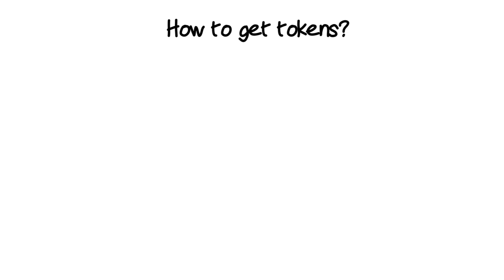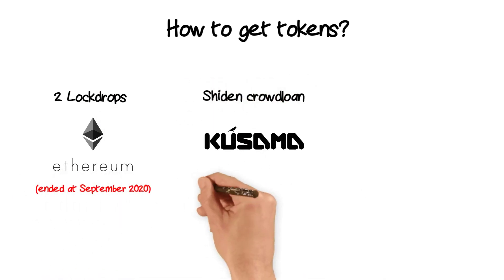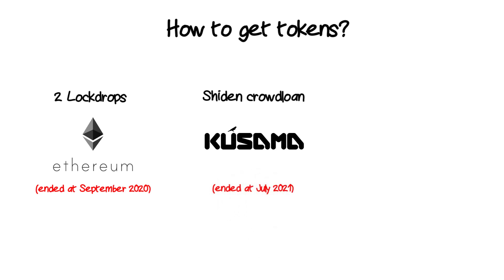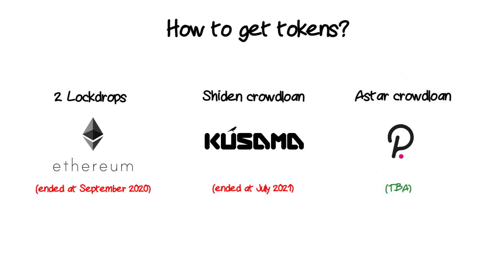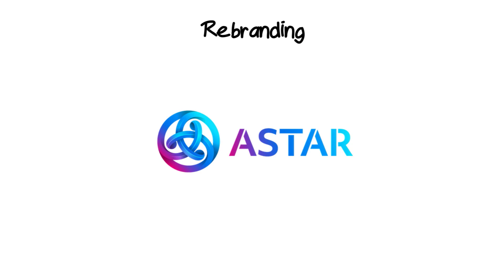Astar developers follow the fair launch principle — you can only obtain ASTR or SDN tokens before exchange listings via a lock drop, or through crowd loans on Polkadot and Kusama. Both lock drops took place in 2020. The first batch of auctions on Kusama ended in July 2021, and Shiden was the third winner. The team does not conduct private sales, ICOs, IEOs, or IDOs. Initially the project operated under the name Plasma Network, but rebranded to Astar to avoid confusion with the L2 scalability solution for Ethereum called Plasma.